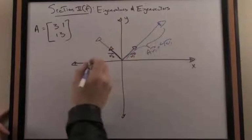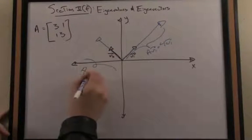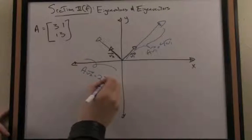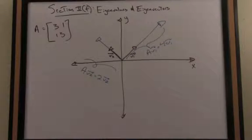So the result of multiplying the vector V2 on the left by the matrix A is that I get this scaled version, scaled by 2. In other words, twice times the original vector here.